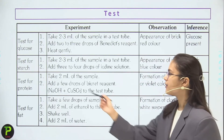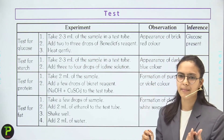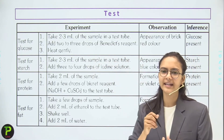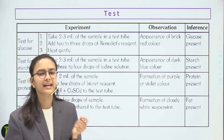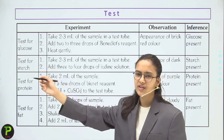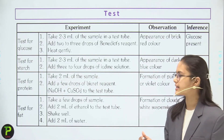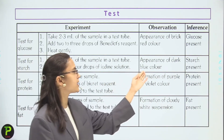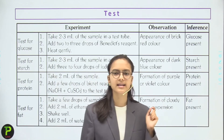To test for glucose: take 2–3 ml of sample in a test tube, add 2–3 drops of Benedict's reagent, and heat. If glucose is present, the sample turns brick red. To test for starch: take 2–3 ml of sample, add 2–4 drops of iodine solution. The appearance of a dark blue color indicates starch is present.